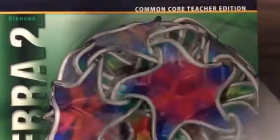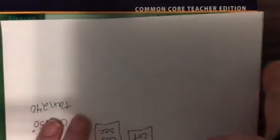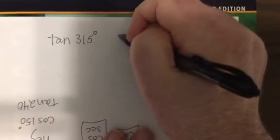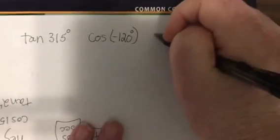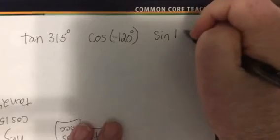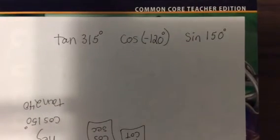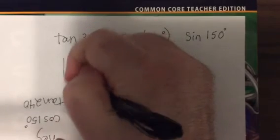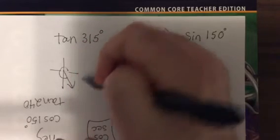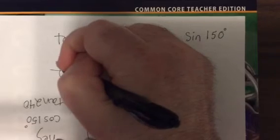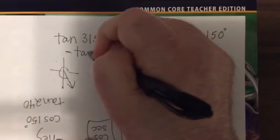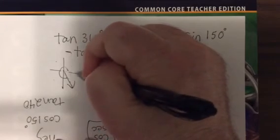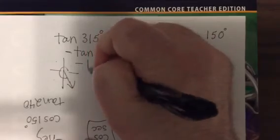So tangent of 315, cosine of negative 120, and sine of 150. Find those three for me please. Okay, good. So 315, we're in the fourth quadrant, tangent is negative. All students take calculus, or this is positive Y, excuse me, negative Y positive X, negative Y positive. And the reference angle, how far is it between the X axis closest and terminal? That's 45. And tangent of 45 is 1.